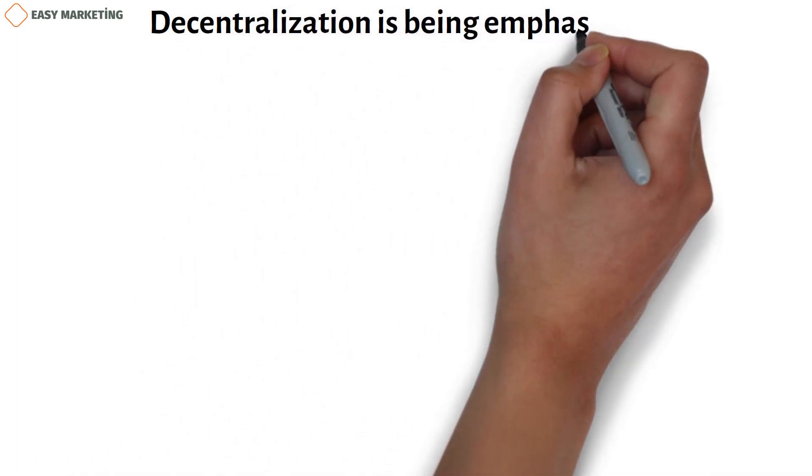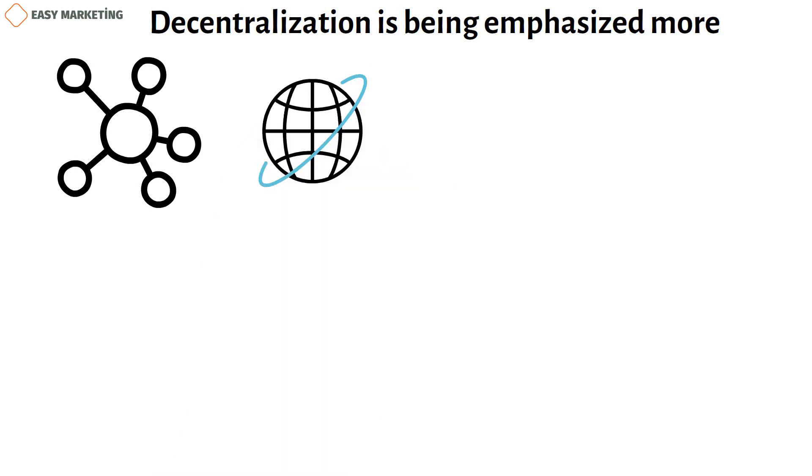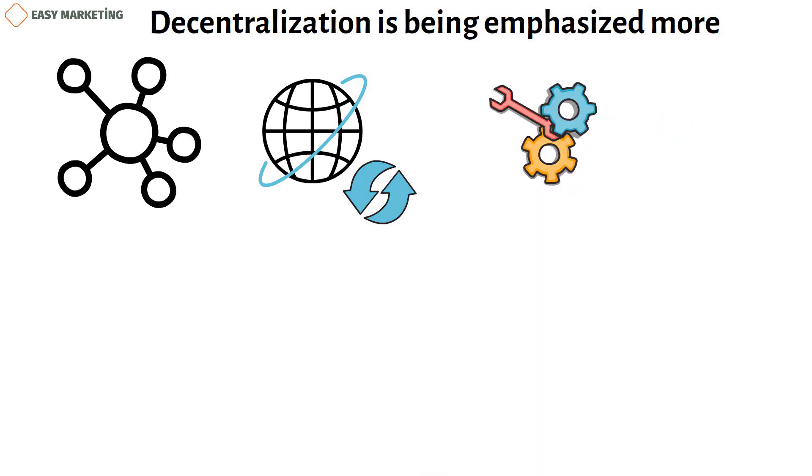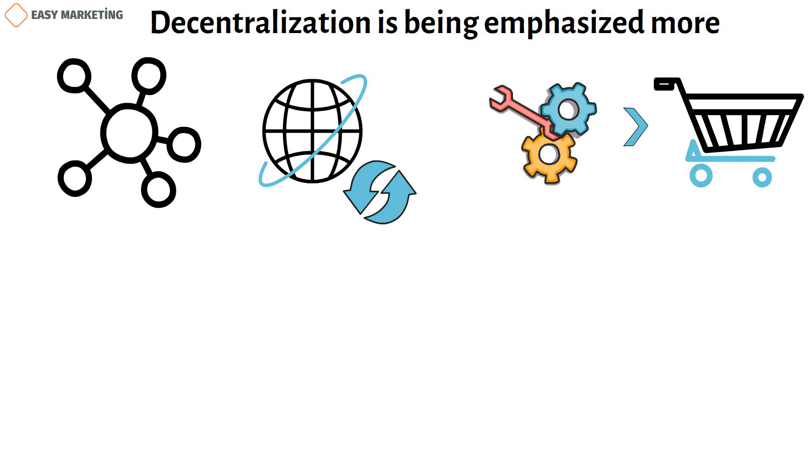Decentralization is being emphasized more. Decentralization was first pushed by the internet, which also brought about significant changes in how businesses distribute their goods and services. By providing a wide range of services and solutions for contemporary trade, new digital intermediaries have taken the position of conventional intermediates.